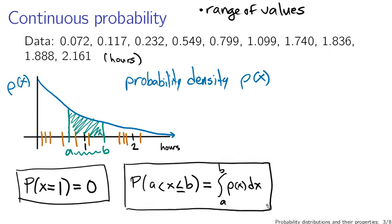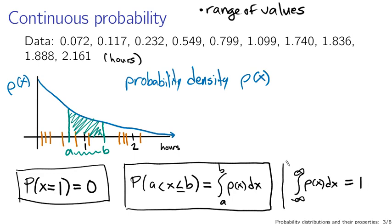You can think of this as the definition of the probability density function. Probability density functions also have to sum to 1, but instead of a sum as in the discrete case, we have an integral. The other property is that the integral from minus infinity to infinity of rho of x dx has to equal 1. This is the equivalent of the sum of probabilities in a discrete distribution being equal to 1.